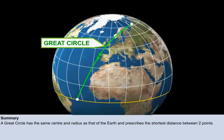To summarize, we have seen that a great circle is a circle on the surface of the Earth whose center and radius are the same as that of the Earth. It also prescribes the shortest distance between two points.